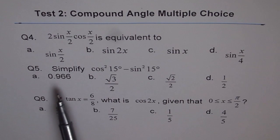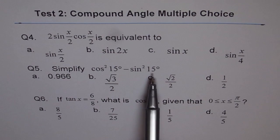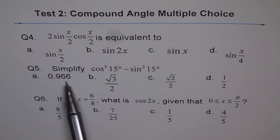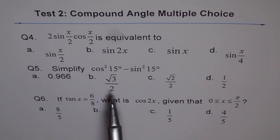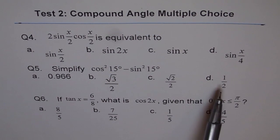Question 5: Simplify cos²15° - sin²15°. The answer choices are: a) 0.966, b) √3/2, c) √2/2, or d) 1/2.